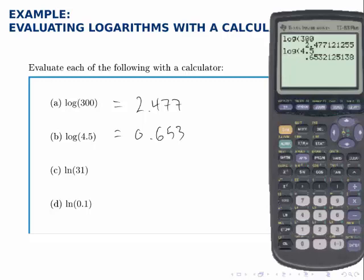For the next two I'll use the ln button just below the log button, ln 31 is 3.434 rounding at the third decimal place.